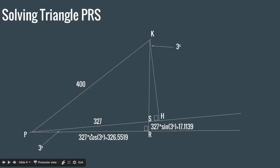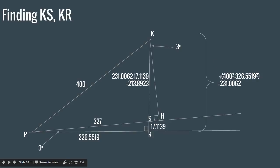So now that we have PR, if you look at PKR again, the big right triangle, you have two sides and a right angle, so you can find KR using the Pythagorean theorem. It's the square root of 400 squared minus 326.5519 squared, and that gives us 231.0062. And that is this whole length, this whole height, KR.